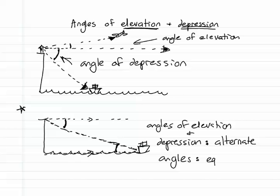So they're equal. The person in the ship is looking up at the cliff top at the same angle as the person on the cliff top is looking down at the ship.